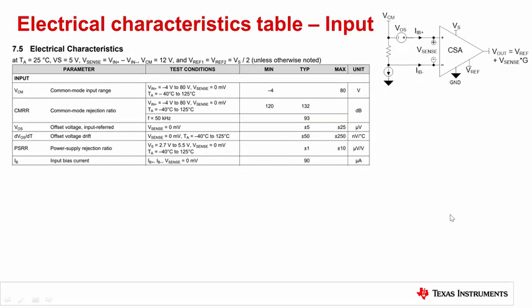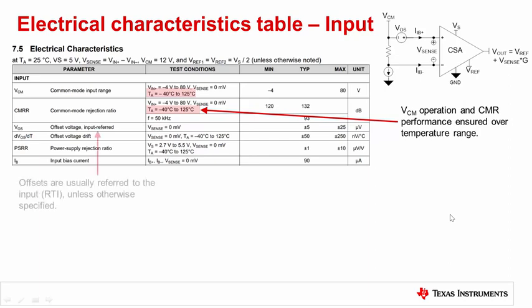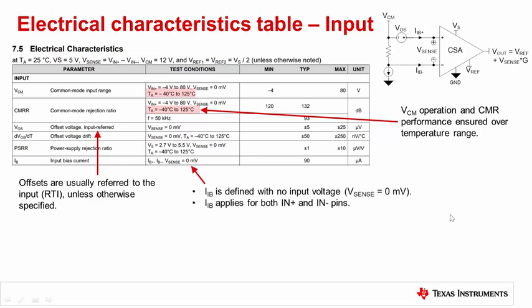Continuing along with the specification table, specifically the input section, we see the many common specifications reported in most amplifier datasheets. Note that the common mode voltage is independent of supply, and it is tested over temperature. So regardless of a system's operating temperature, the worst case CMRR of 120 decibels should be used when calculating a total offset. While some specs may not dictate it, all of the error sources such as CMRR, drift, and PSRR should be considered input referred, unless otherwise stated. This allows for the easy calculation of a worst case input offset when performing an error analysis. Note that when the conditions list VSense equaling 0, this means that the inputs are shorted together. This is seen with the input bias current spec.